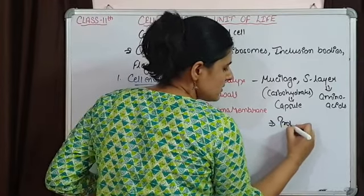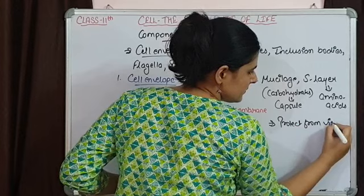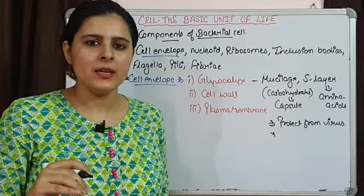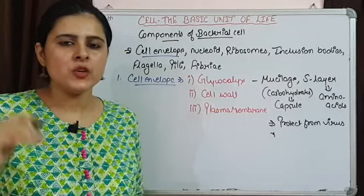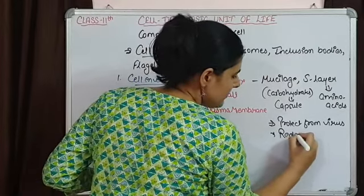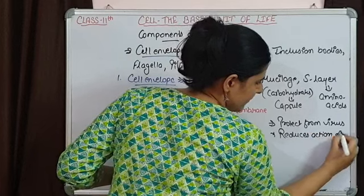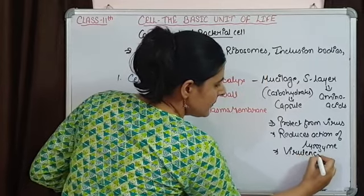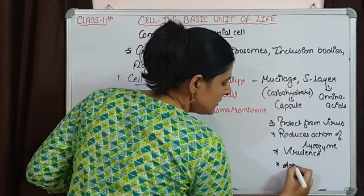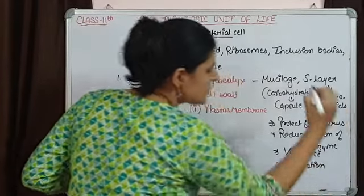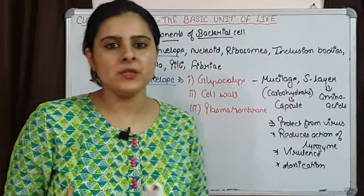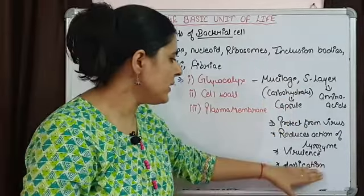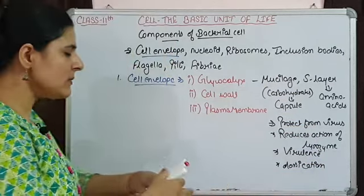The glycocalyx also reduces the effect of lysozyme — the enzymes responsible for killing bacteria — and prevents the bacteria from desiccation. It also provides virulence, meaning disease-causing ability, to the bacterial cell. So while it is not important for survival, it provides all these additional characteristics.